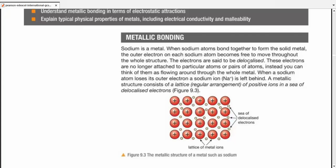The electrons are said to be delocalized. These electrons are no longer attached to a particular atom or pair of atoms. Instead, you can think of them as flowing around the whole metal.